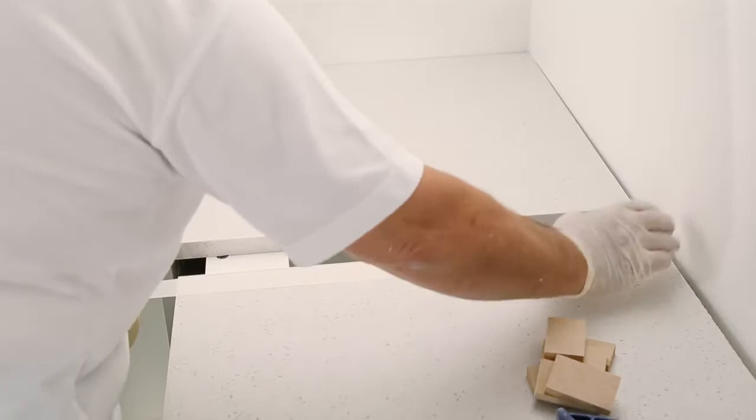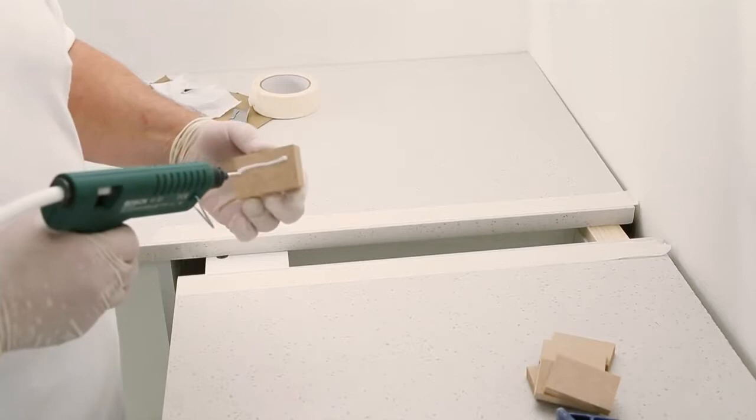Two layers of masking tape are then applied around 3mm from the edge of each joint line. These will help to save time later in the sanding process.